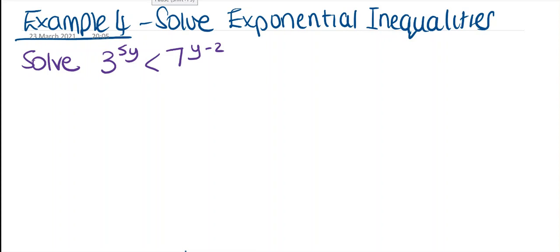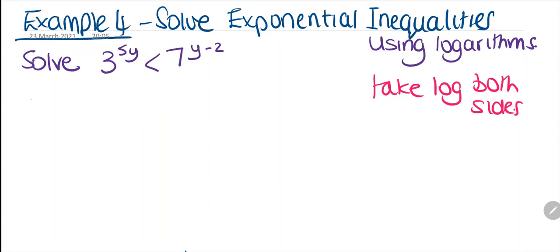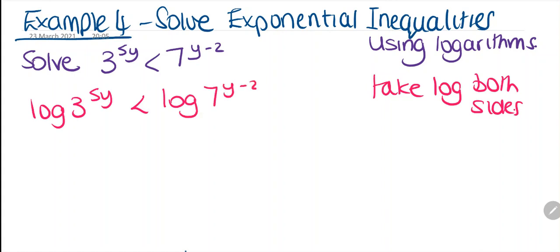We need to look at solving exponential inequalities using logarithms. What we need to do is take the log of both sides. So this means we write log 3^(5y) is less than log 7^(y-2).